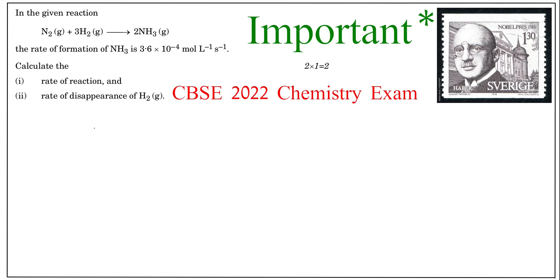So let's write the given information. It says that rate of formation of NH3, that means d[NH3] divided by dT, this is given as 3.6 into 10 raised to the power minus 4 mole per liter per second.